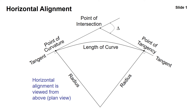Horizontal alignment is viewed from above, which is known as the plan view. In this image, we are connecting two tangents with a simple curve. The point where the curve leaves the tangent is known as the point of curvature, and where it returns to the tangent is the point of tangency. The two tangents connect at the point of intersection, and the curve is described both by its length and by the radius.